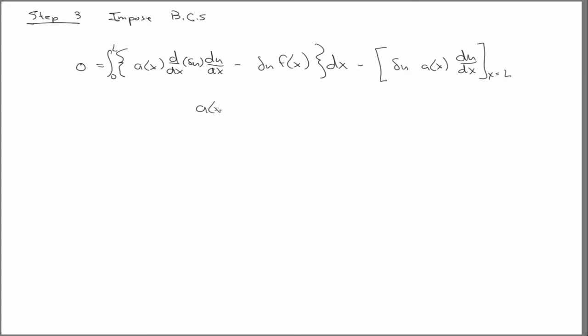So step three is to impose the boundary conditions. And so with that, we have the integral from zero to L. And we know that this is given as a boundary condition. So you can see that this term corresponds to that term. So therefore, we just plug it in.